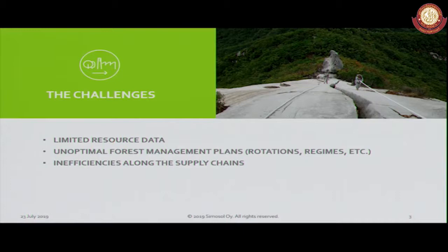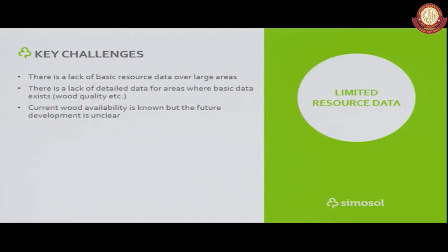Regarding resource data, these are some of the questions our clients face. In some cases there is basically no data at all, and we have to start from making inventories or resource assessments using imagery combined with field work. In other cases some data is available but the quality is not good enough — for example, wood quality is unknown, or species data is missing. And in some cases the current situation is known and data quality is okay, but there are no projections of the future, such as wood availability going forward.